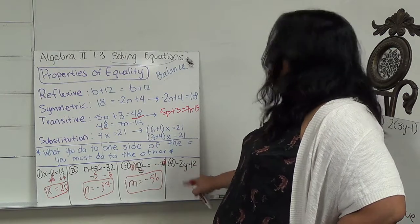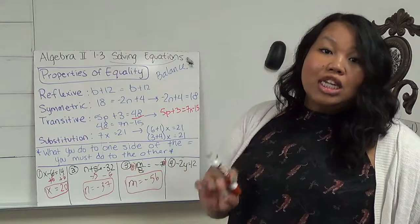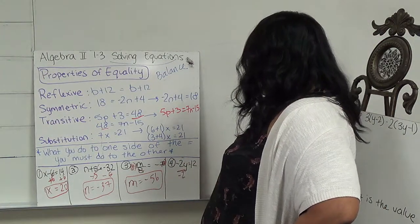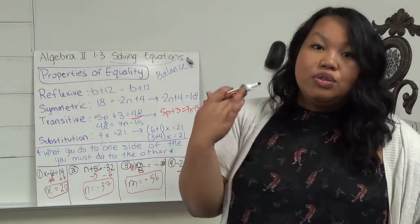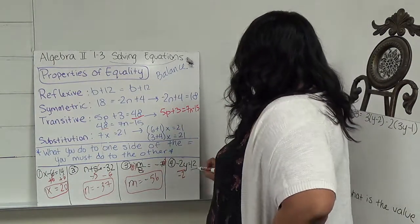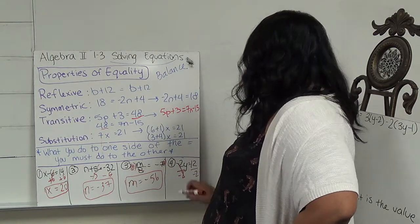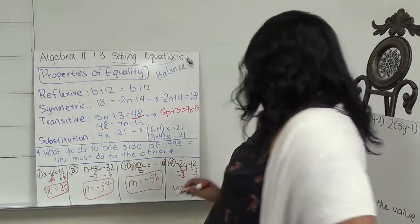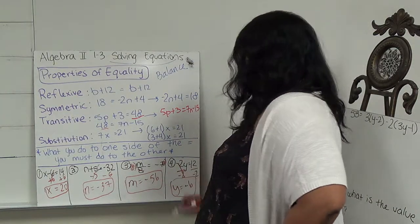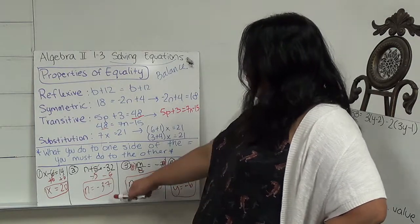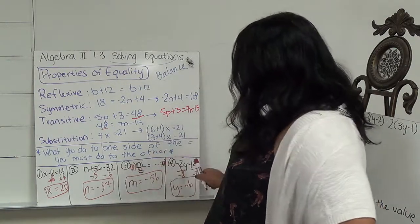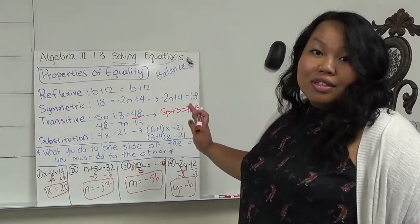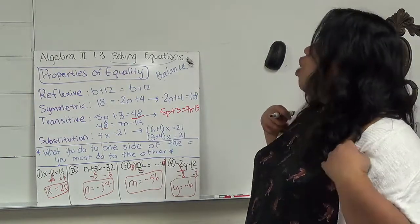This one has a negative 2y that's attached to it. And since it's right next to it, it's attached by multiplication. And the opposite of multiplication is division. So divide by negative 2. And what I do to one side, I have to do to the other. This cancels out. And I end up with y equals 12 divided by negative 2 is negative 6. And one more time, I know these are correct because if I plug it back in, it should give me the same number on both sides of the equal sign. So go ahead and pause, write this down. I have one more board for you.